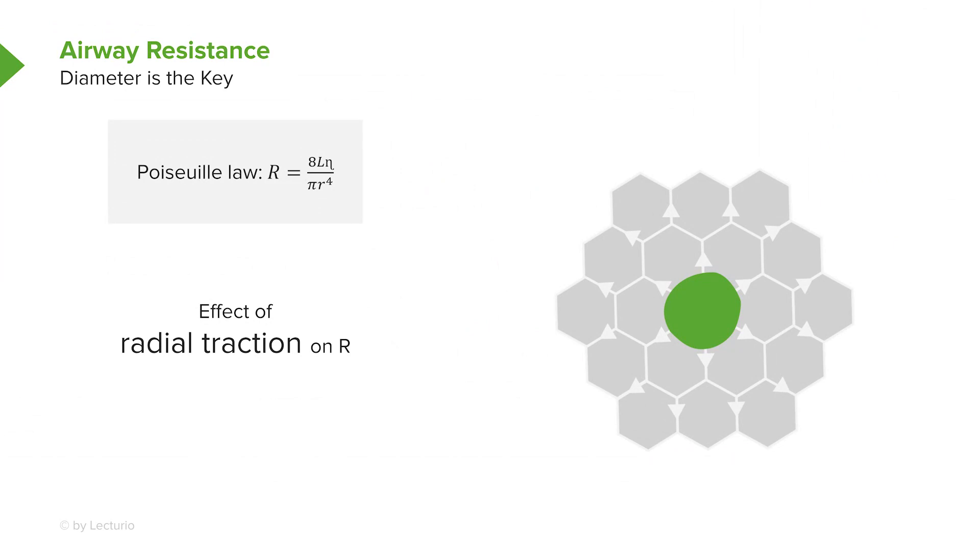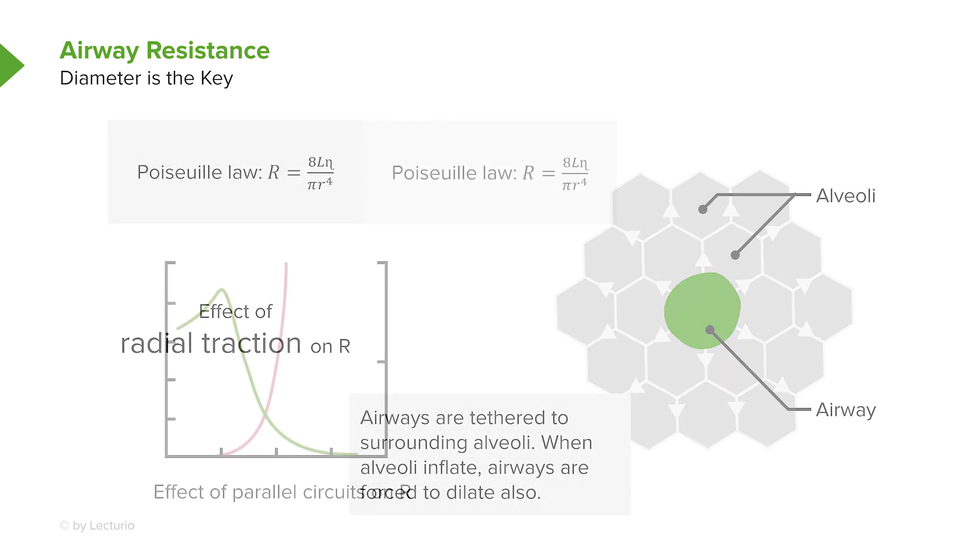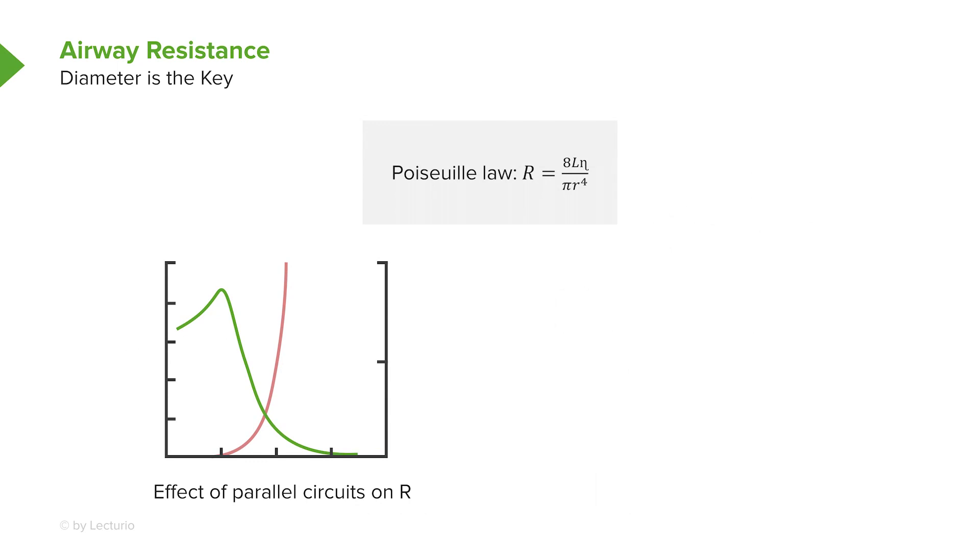Another factor that affects airway resistance is pulling on the air sacs themselves. So as you pull on an air sac, you make it larger. As you make it larger, you're increasing the radius and therefore you're decreasing the amount of resistance. So the effect of radial traction as you pull on something allows an airway to dilate so it has lower resistance. So parallel circuits, radial traction, both decrease resistance in the airways.